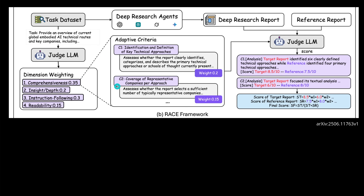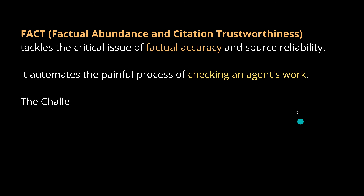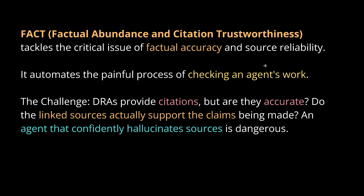FACT is the second framework, about factual accuracy — checking the agent's work, particularly citations. Are those citations accurate? Do the linked sources actually support the claims being made? An agent that confidently hallucinates sources is quite dangerous. So check not just that the resources exist, but that the content of those resources is really what the task requires.